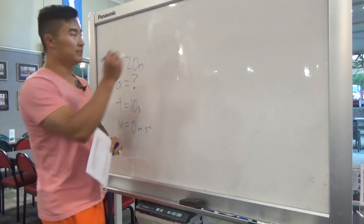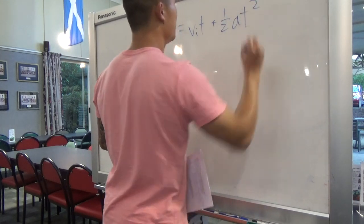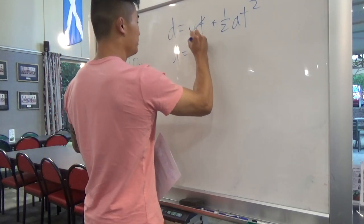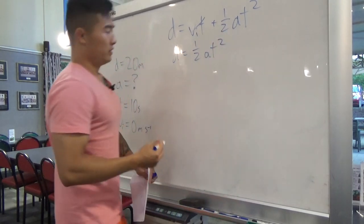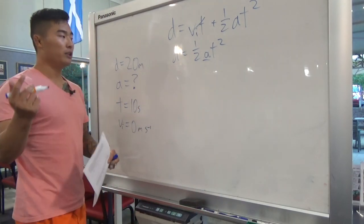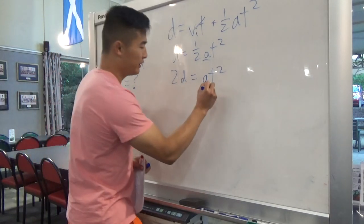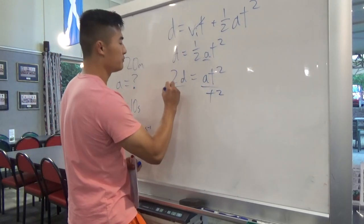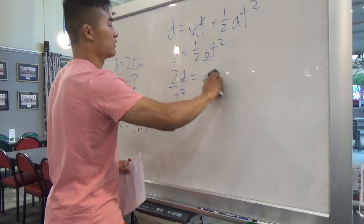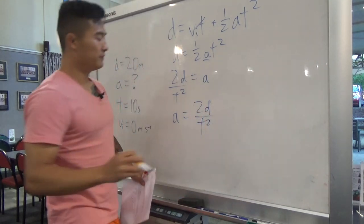The equation is d equals vi times t plus half a t squared. Since initial velocity is zero, that term drops out and we're left with d equals half a t squared. This time we want acceleration, so multiply both sides by 2: 2d equals at squared, then divide both sides by t squared. Acceleration equals 2d over t squared.